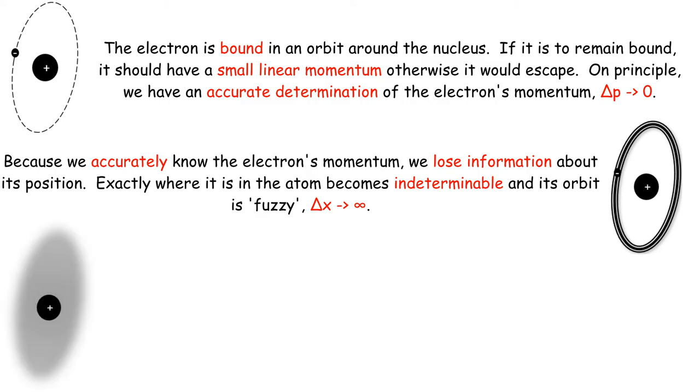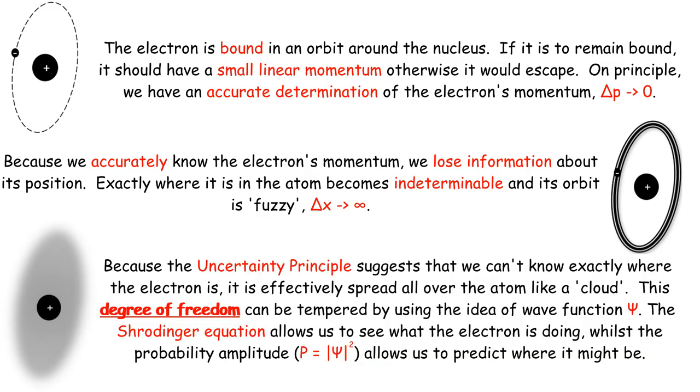But because we accurately know the electron's momentum, the uncertainty principle says that we lose information about its position. So its orbit is no longer clear, it becomes fuzzy. Because we don't exactly know where the electron is, it's spread all over the atom like a cloud. Now this isn't a bad thing. It's a degree of freedom, and we can temper this by using the wave function to predict where it could be around the nucleus or in the atom.